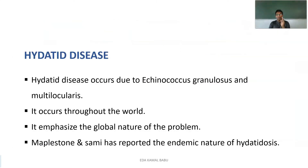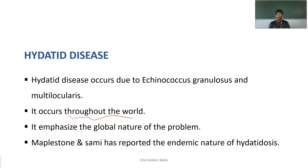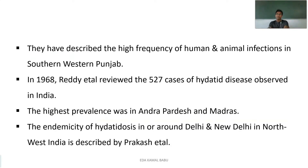Hydatid disease is mainly caused by two types of organisms: Echinococcus granulosus and Echinococcus multilocularis. These are the two organisms responsible for this disease. It can occur throughout the world. Maplestone and Samir are the ones who reported regarding the endemic nature of hydatidosis, describing high frequency of human and animal infections.